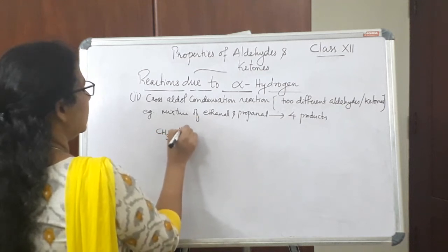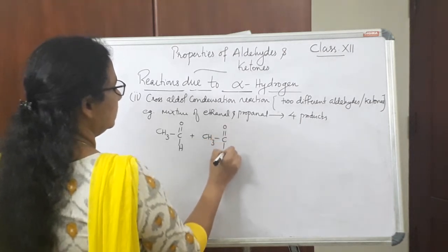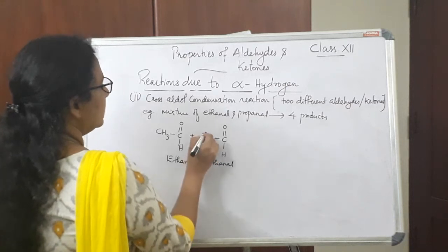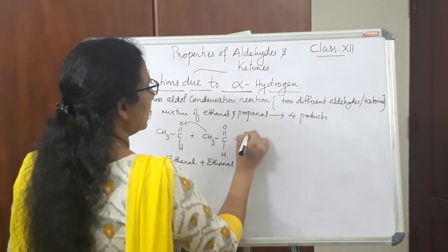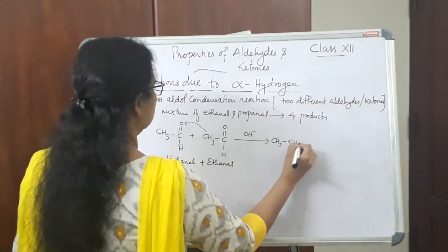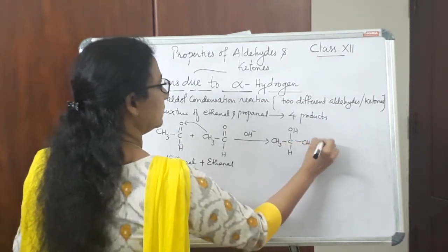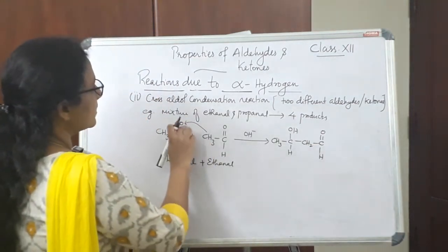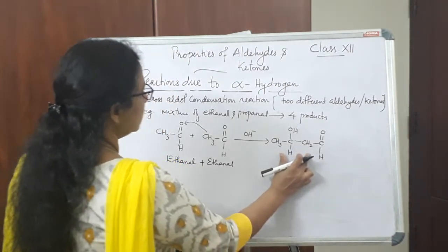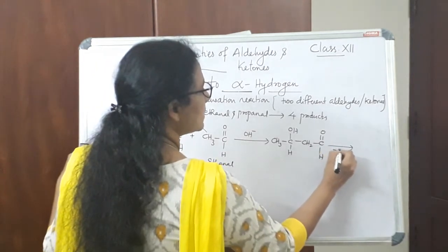First, we consider ethanal plus ethanal. We have seen this type of reaction in the case of simple aldol condensation. Ethanal has an alpha hydrogen atom. This alpha hydrogen moves towards the oxygen and the rest of the part attaches to that carbon, forming an aldol product. This is a cross aldol product since we have taken a mixture of ethanal and propanal.